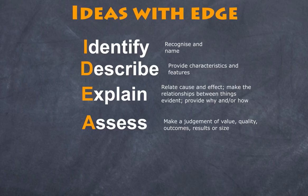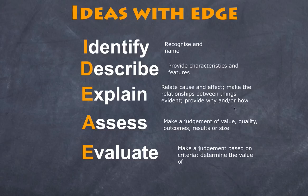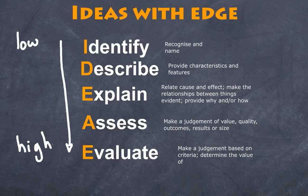Finally, the E stands for Evaluate — making a judgment based on a certain set of criteria and determining the value of what's being argued. As you go from Identify down to Evaluate, you go from low order thinking up to considerably higher order thinking. The key point is that when you answer a question that asks you to assess something, you don't start with assessing — you start with identifying the various aspects involved, then describe, then explain, and only then assess.